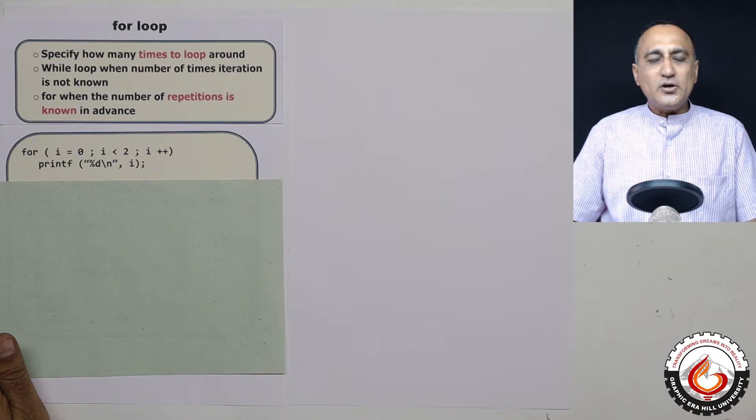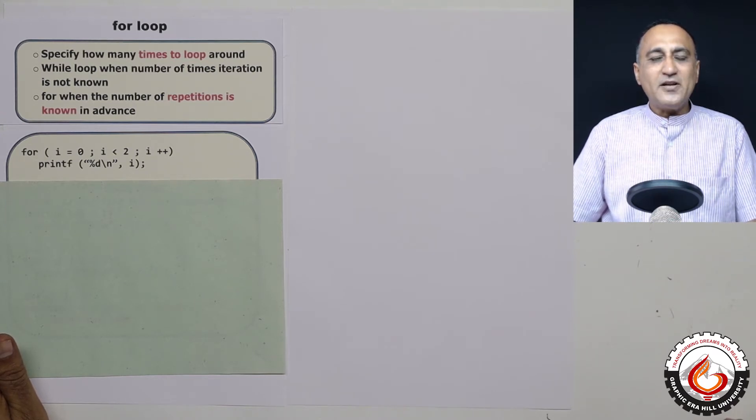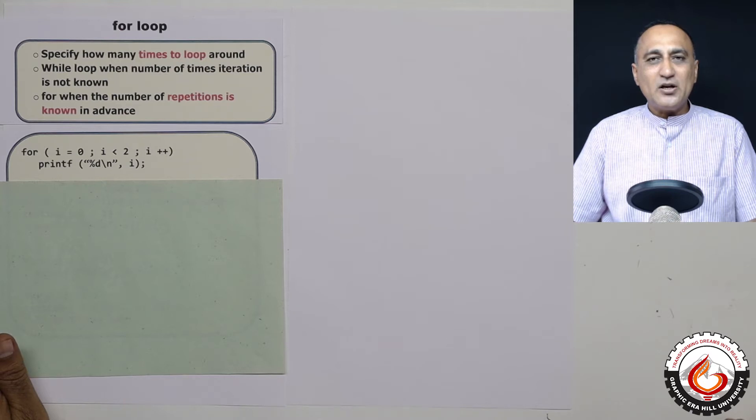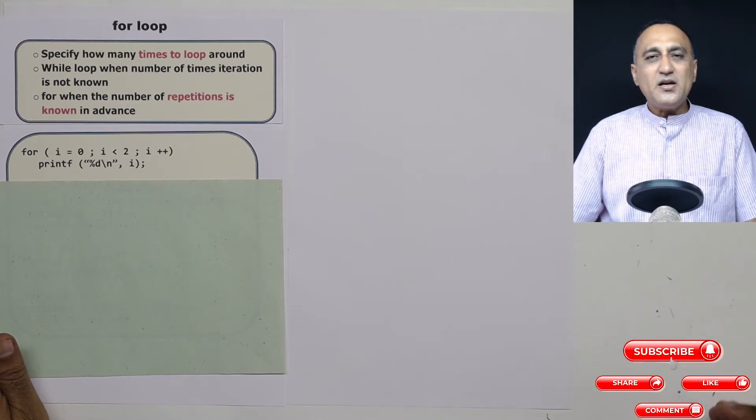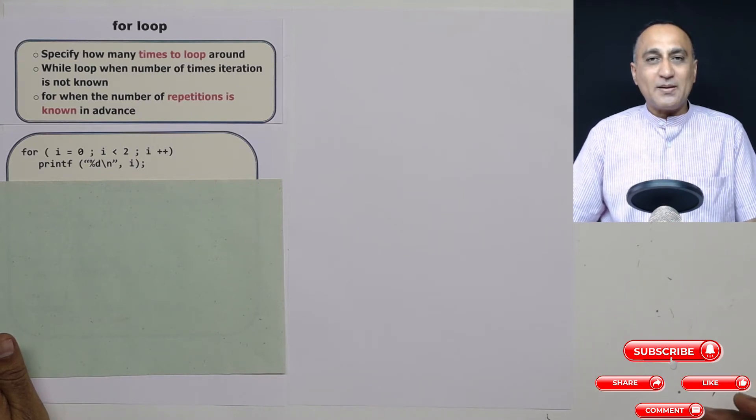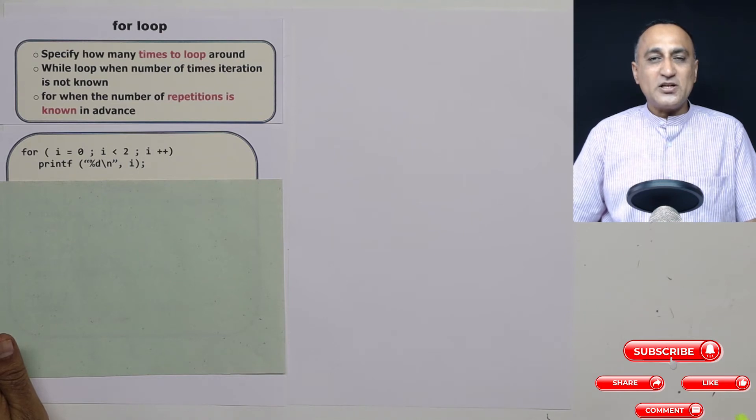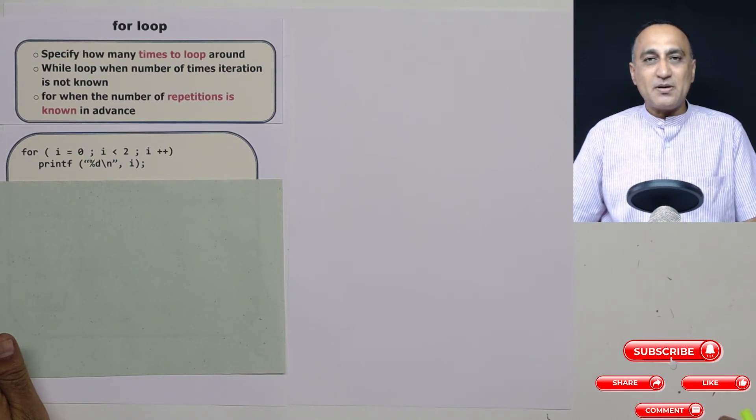Suppose I am trying to ask the user to enter a number and determine if an input number is a prime number or not. This may be a good example where I may end up using the while loop, because I'm not sure at what point of time I will complete my processing to find out whether a given number is a prime number or not.